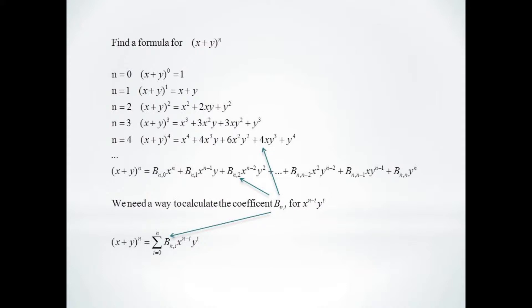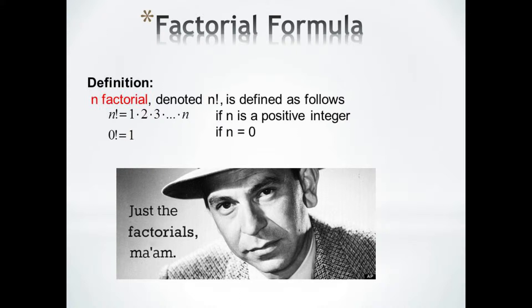So what is the formula for our binomial coefficients? We start by defining n factorial, which is denoted by n followed by an exclamation point.